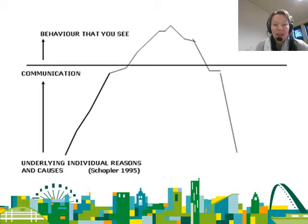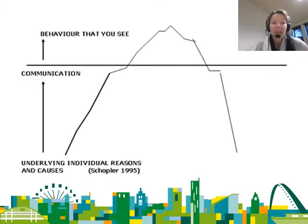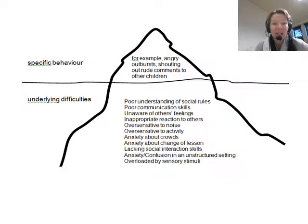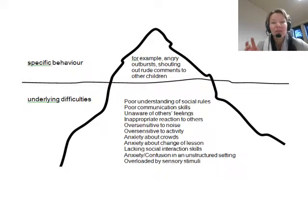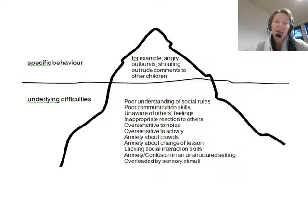What you see is a behavior — that's the bit at the tip of the iceberg. The waterline represents communication, and underneath are all the other things going on. For an ASD person, what we might see is angry outbursts, shouting, rude comments, hitting, biting. But where that's coming from is often sensory difficulties, anxiety, not knowing what to do, being overloaded. Trying to deal with the behavior isn't really going to work because unless you address the things underneath the waterline, you're not actually going to change that behavior.